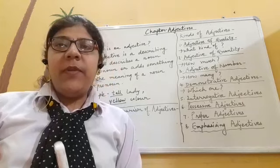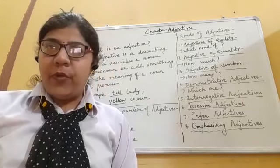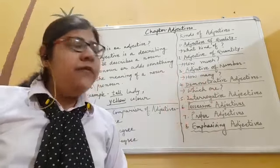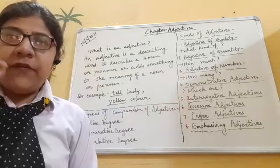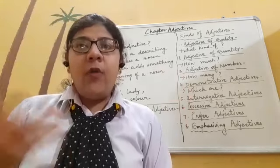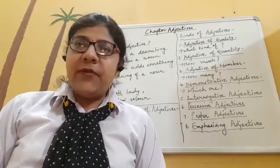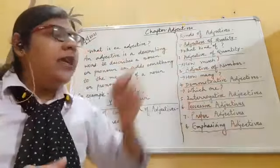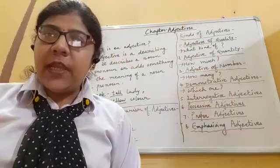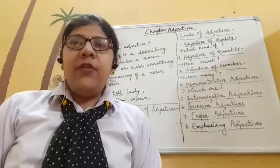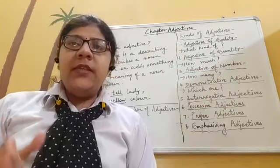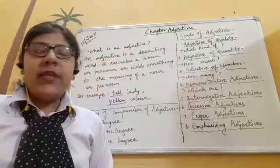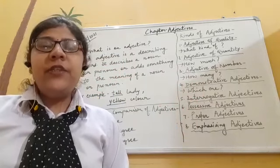Next is adjective of quantity — those adjectives which tell us about the quantity of a noun or pronoun. We question with 'how much.' For example, 'give me some sugar' — how much sugar? Some. So 'some' is an adjective of quantity. Remember, adjectives of quantity are always used with uncountable nouns like rice, juice, and sugar.